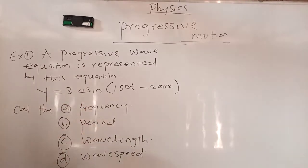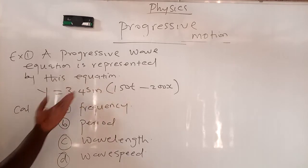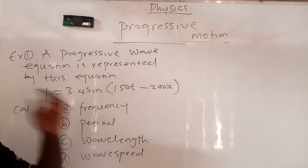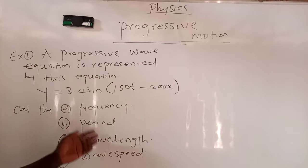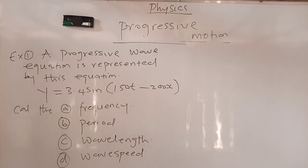You have an equation at the bottom. A progressive wave equation is represented by this equation. Look at the equation here. Calculate the frequency, the period, the wavelength, the wave speed. In part 1 of the video, it was already introduced. We made the whole derivation needed. Now we are into the calculation aspect of progressive wave. Let's go.